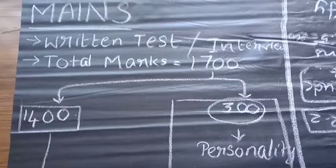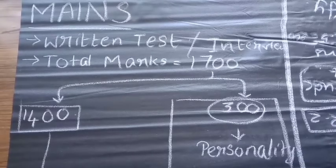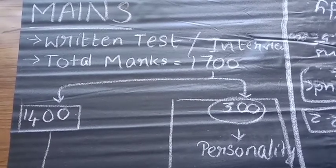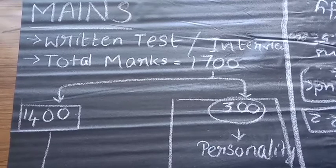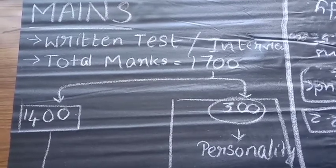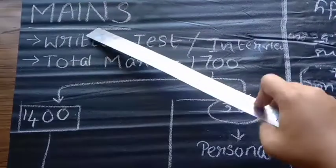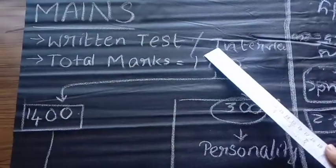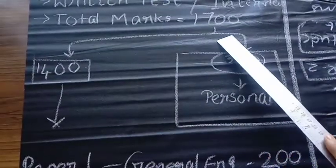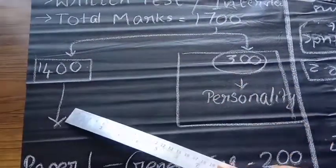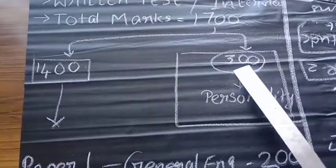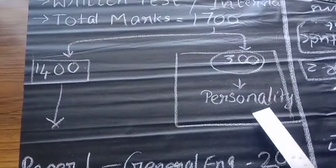Next is the mains examination. If you qualify your preliminary stage then you will be called for IFS mains examination. This mains will have a written test and an interview. Total marks for the mains is 1700 marks. In that, 1400 marks will be for your written examination and 300 for your personality test.